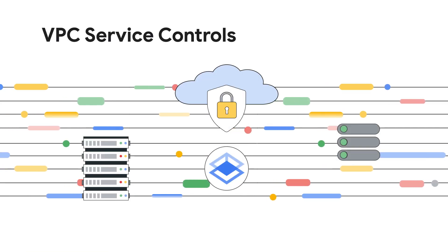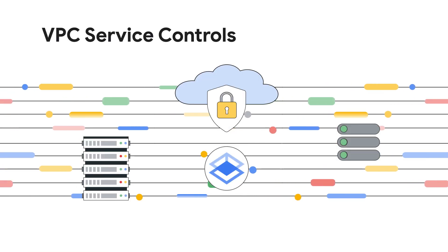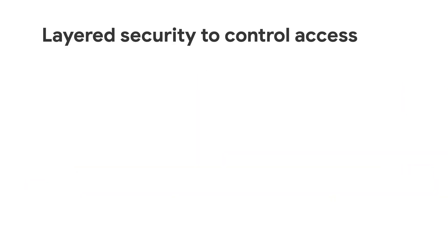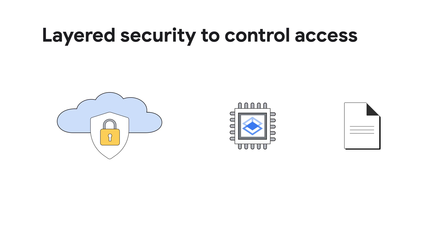Google Cloud's VPC Service Controls, or VPCSC, is a security product that allows you to control access to Google Cloud services. With VPCSC, you can create service perimeters that define which Google Cloud services can be accessed, and you can control how those services are accessed. VPCSC lets you create an extra layer of security defense for Google Cloud services and resources. It complements IAM, which provides granular identity-based access control.